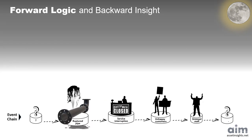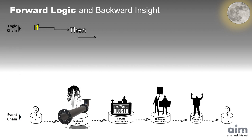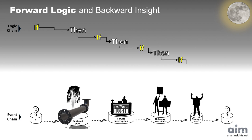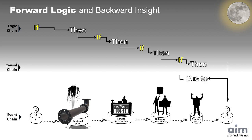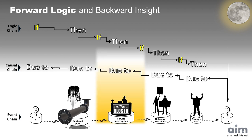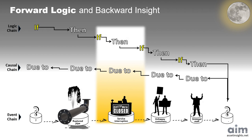For data modeling and data management, there are two ways to think about a causal chain. Logic chains ask, what happens if? They move forward, using a series of if-then statements to model potential outcomes. Causal chains ask, what was this event due to? They work backward, tracing the origins of an outcome. By shifting the lens between forward-looking logic and backward-tracing causality, we uncover not just the outcomes, but the underlying drivers.